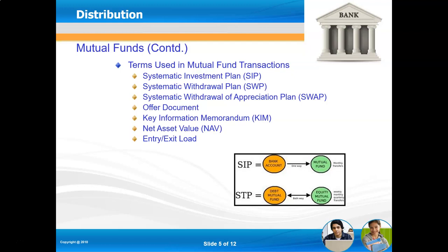Key terms in mutual fund transactions: SIP — Systematic Investment Plan, where a fixed amount is transferred monthly from your bank account to the mutual fund. SWP — Systematic Withdrawal Plan, where funds are transferred from the mutual fund to the customer's account monthly or quarterly. SWAP is the Systematic Withdrawal of Appreciation Plan. The Offer Document provides details of the scheme including risk appetite and return expectations. KIM stands for Key Information Memorandum. NAV — Net Asset Value — is the market value of one unit of the mutual fund. Every mutual fund must declare its NAV of all schemes on its website daily, as per SEBI guidelines.